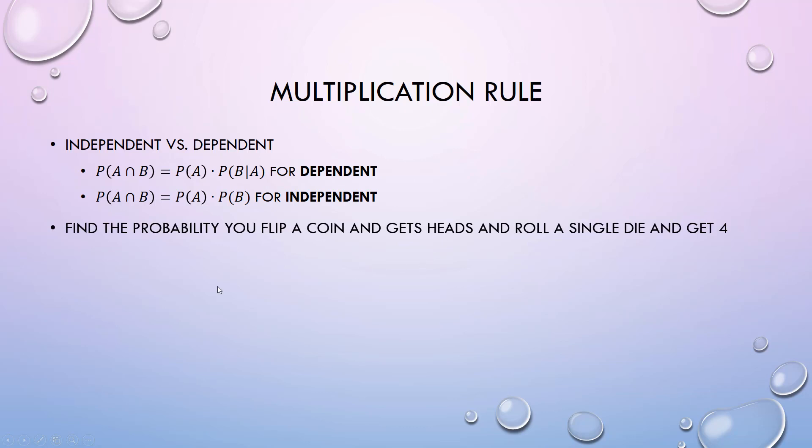Find the probability you flip a coin and get heads and roll a single die and get a four. These don't depend on each other, so this would be independent. It's just what's the probability you flip a coin and get heads - one half - and what's the probability you roll a single die, a six-sided die, and get a four? There's only one four out of six.